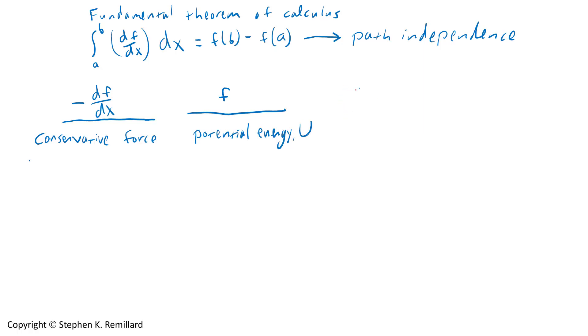Looking at the integral in the Fundamental Theorem, if df by dx with a minus sign is force, so df by dx is minus force, integrated from point A to point B. We'll just think one-dimensionally here, dx. That equals f, which is apparently a potential energy at the end points. Rearrange that and say that force is minus the gradient of potential energy.